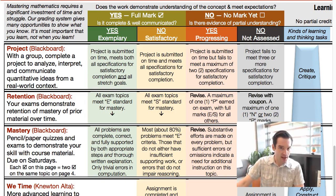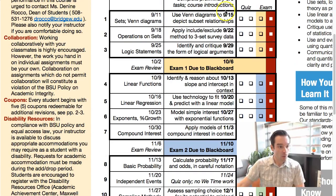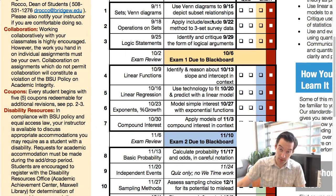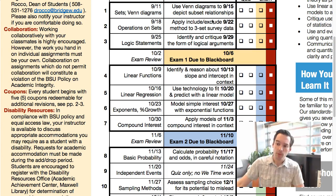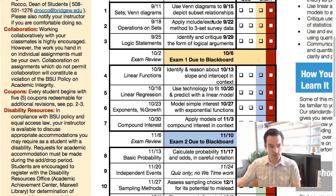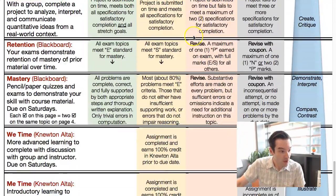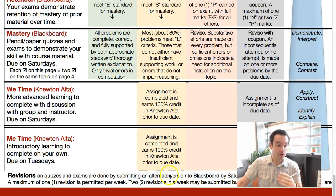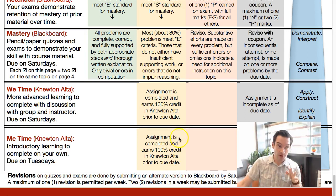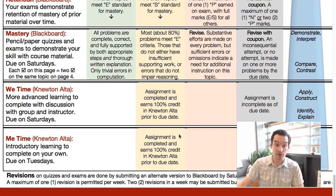What happens if your work on a quiz or exam doesn't meet the standard for full credit? I use a process called standards-based grading. The intention is to help you focus on the main topics and skills you need to develop rather than stressing about individual quizzes or tests. What that means is that my most important priority is that you're learning, not when you're learning. So if you don't get full marks on a quiz the first time, you have an opportunity to revise it later. You'll submit an alternate version, and if you get full marks on that revision, you get a checkmark just as though you'd gotten full marks the first time.